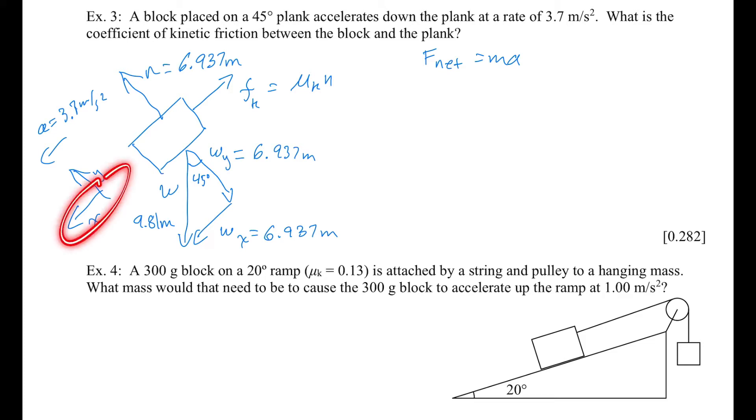If we look in the x direction, we have w_x in the same direction as x, and we have f_k going the other way. Those are the only things I see in the x direction. So let's do in the direction of x is w_x. Going against it is f_k. That's your ma.